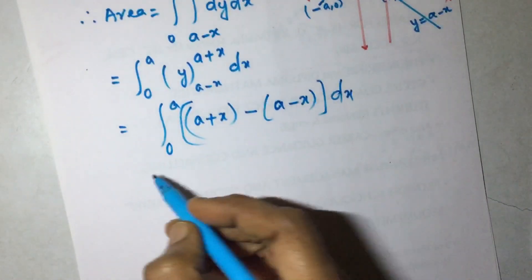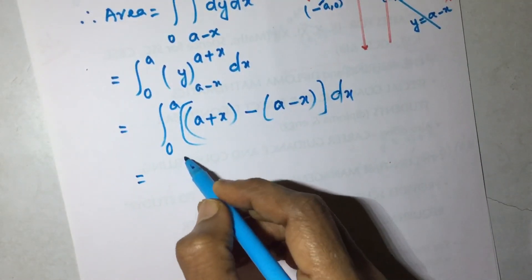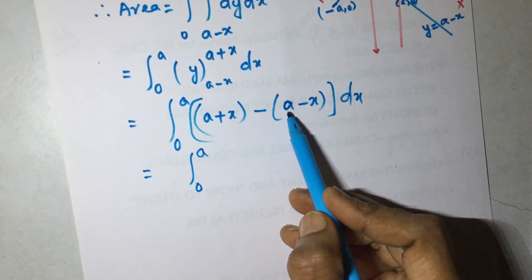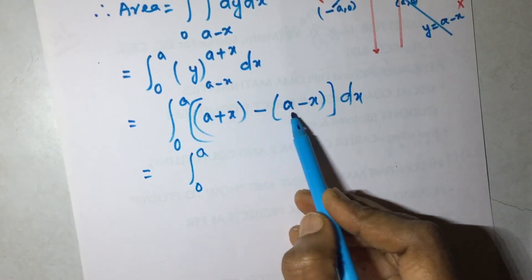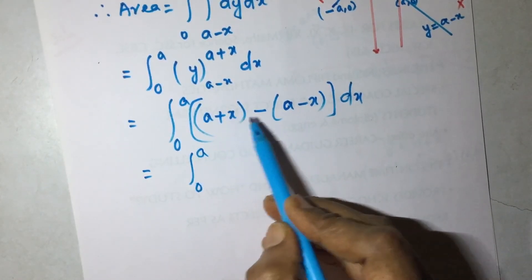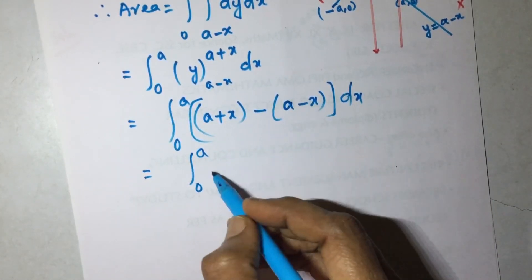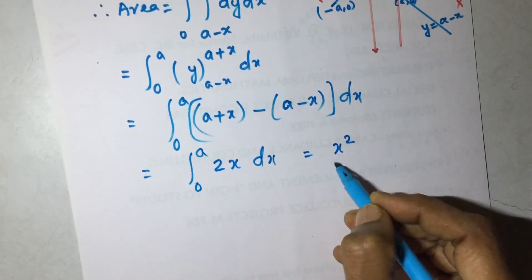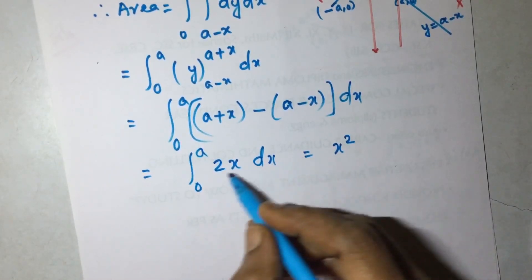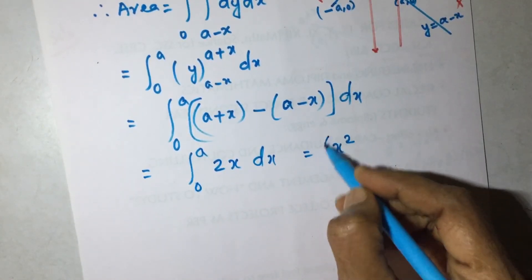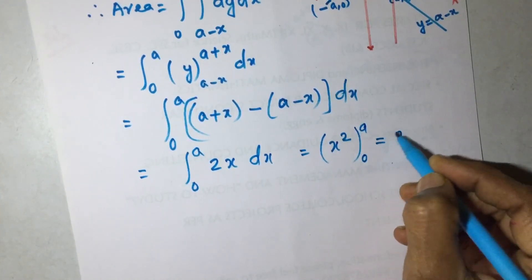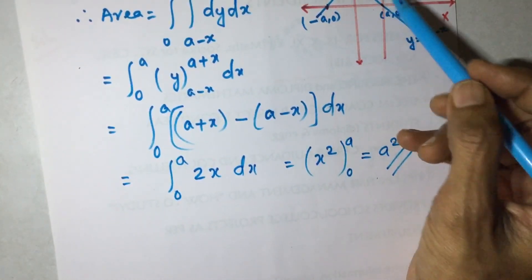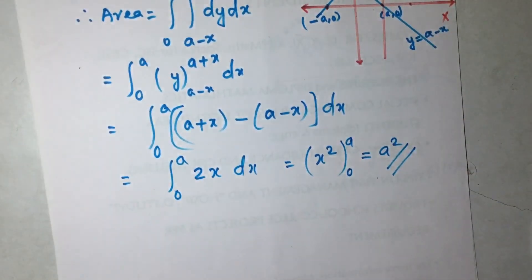That equals the integral from 0 to a of (a plus x) minus (a minus x) dx. Opening the bracket: a plus x minus a plus x gives 2x. So the integral is 0 to a of 2x dx, which equals x squared from 0 to a — the 2 cancels — giving a squared. So the area bounded by the given lines is a squared.